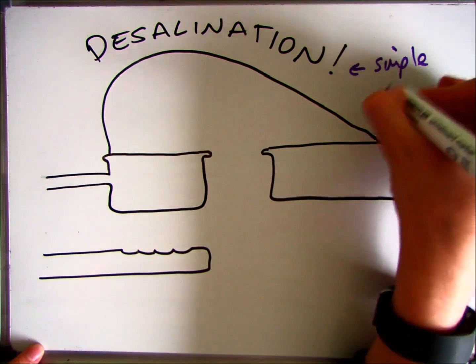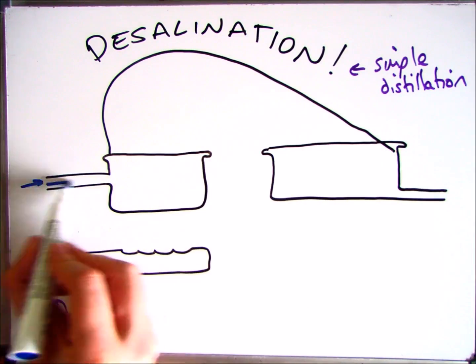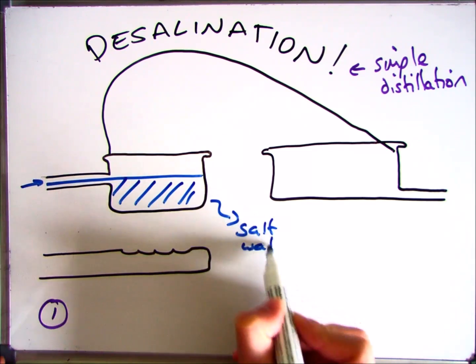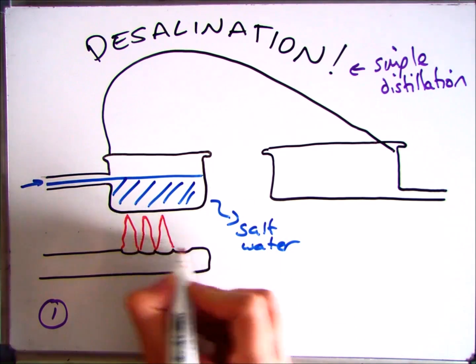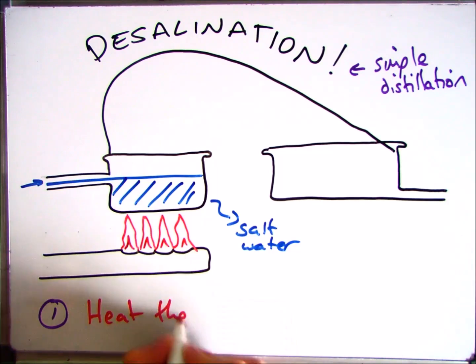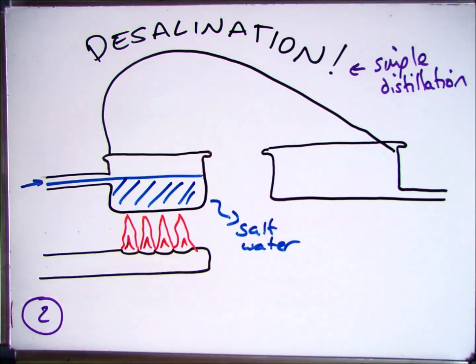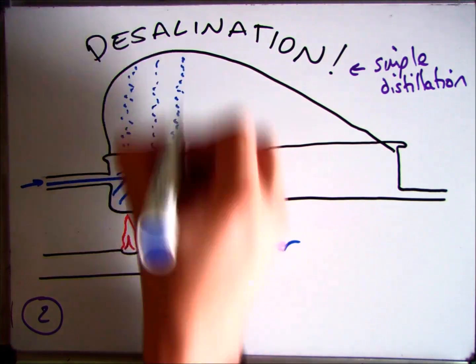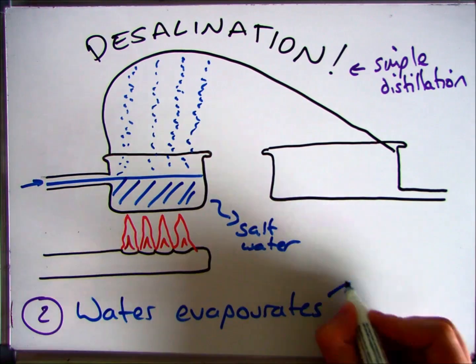So desalination is a simple form of distillation. The first step is to put your salt water into the apparatus, as you can see here, and then heat it up. As you heat the salt water, the H2O, the water, will start to evaporate, leaving the salt behind.